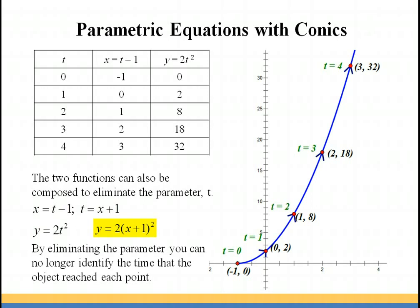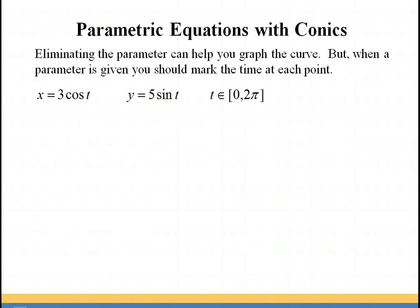When we eliminate the parameter t, we can't find at what time the object reached each point. So we'd still have to go back to the original two equations to plot the time and the direction. Notice that arrowheads are used to show the direction of the object's movement. So the parameter t gives us a little bit of extra information.